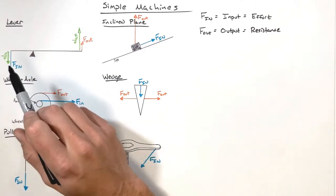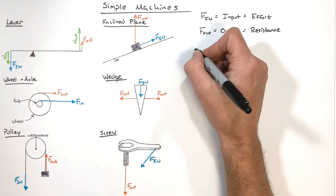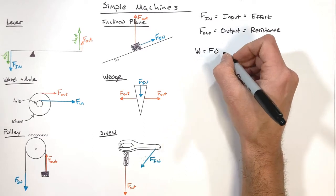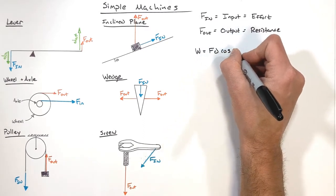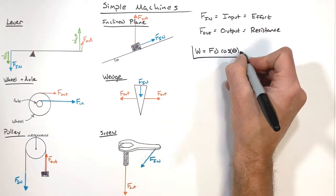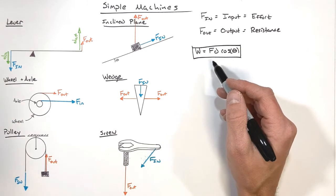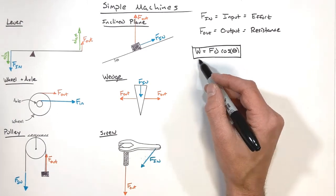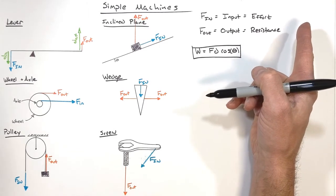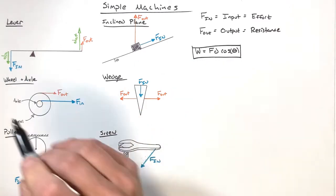There's a really important thing here that truly defines simple machines for us. I want to look at work. Work is defined as force times displacement times the cosine of the angle between the force and displacement. You may have seen this before in physics or engineering. This work formula can be applied to a lever.